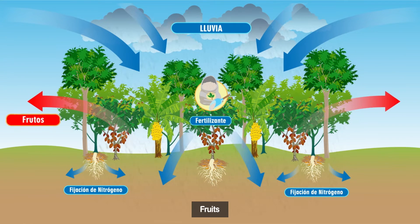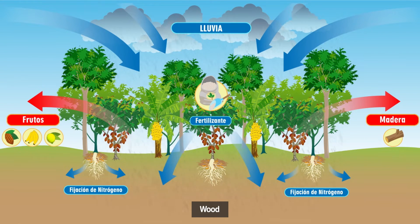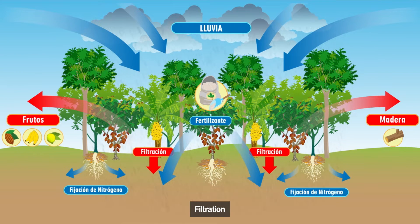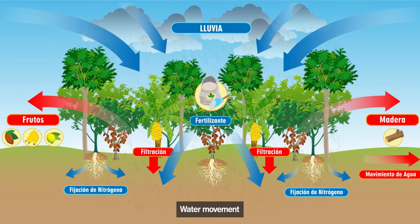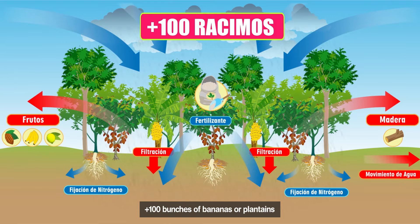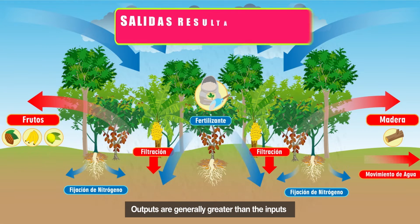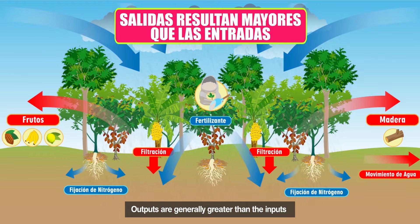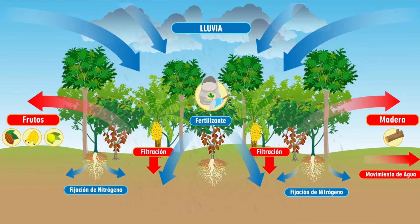On the other hand, the outputs are given through the harvest of cacao, banana, other fruits, firewood, or wood obtained in the cacao plantation. Also, nutrients are lost by filtration and by soil dragged by water. For example, in a cacao plantation that is not fertilized, when more than 500 kg of dried cacao and more than 100 bunches of bananas or plantains per hectare per year are produced, the outputs are generally greater than the inputs, even though we have leguminous trees and abundant rains. Therefore, it will always be necessary to fertilize.